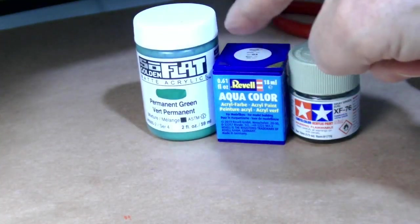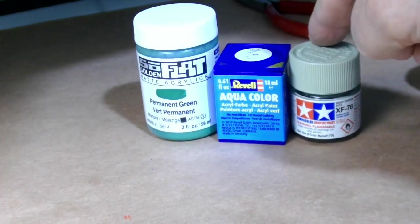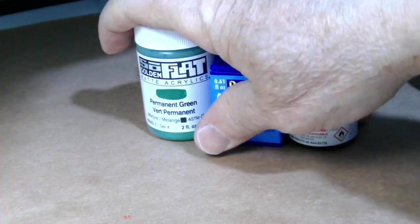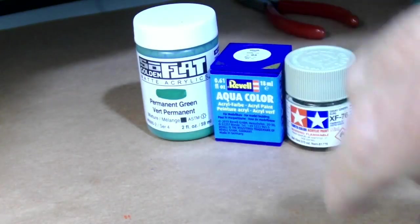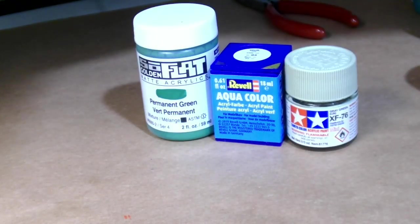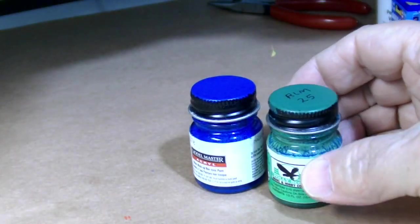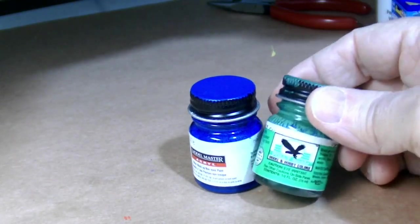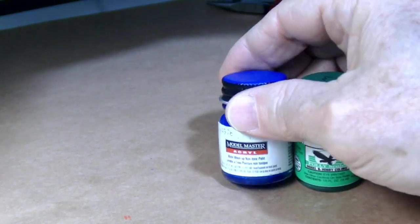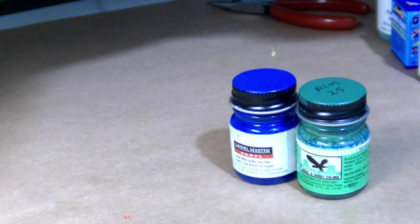Sо Flat Aqua Color, Tamiya—Windex gets them thin. Not water, not alcohol. No alcohol involved here. Let's talk about some other very high quality paints if you can find them: Poly Scale and Poly Scale's little brother Model Master Acryl, really great paint.